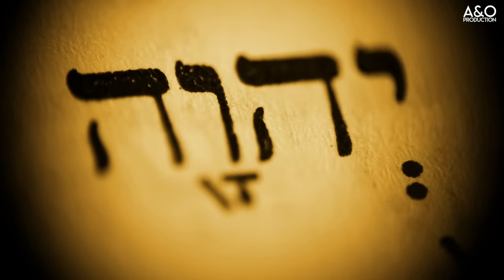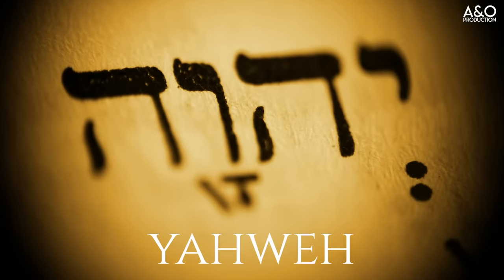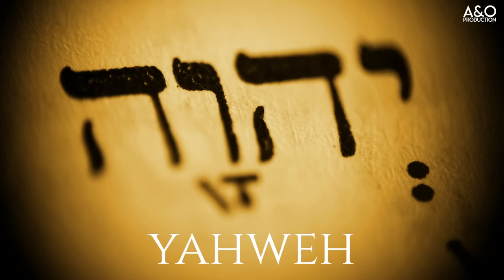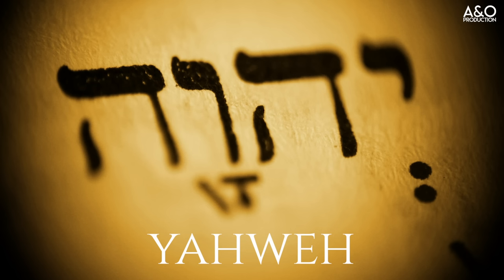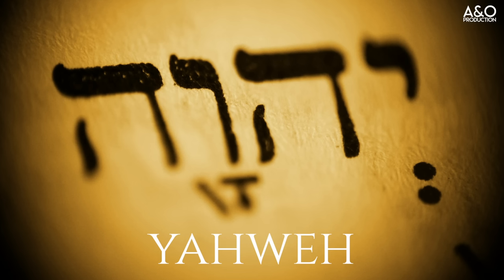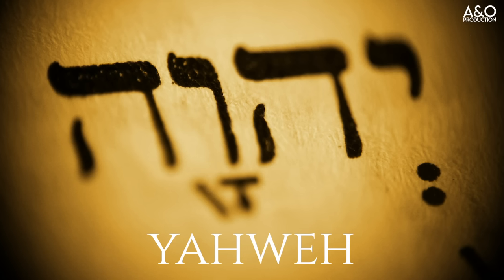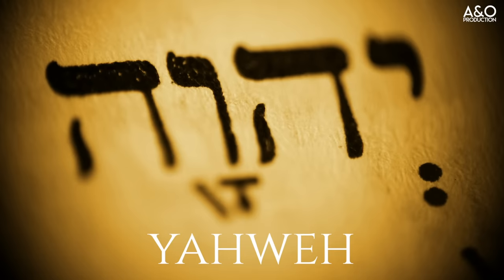Today, Yud, He, Vav, He is most often rendered as Yahweh when written or spoken by Christians and others. It is still never pronounced aloud by Orthodox Jews. The pronunciation Jehovah is an older, less accurate rendition of these letters. It originated with the early German translators of the Hebrew language and their sounds, thus the more Germanic sound of Jehovah.